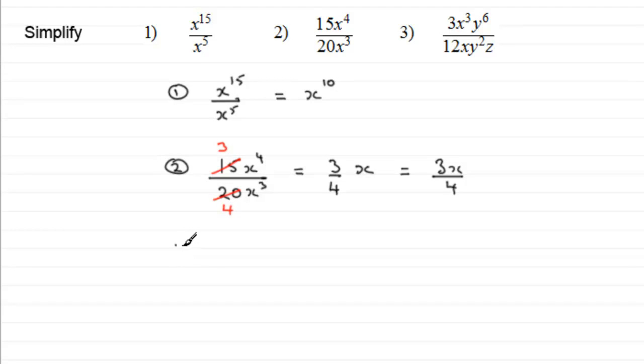Now with number three, the last example, we've got to simplify 3x cubed y to the power 6 all divided by 12xy squared z. In this example again I noticed that with the numbers, three divides both into the 3 and the 12. So we can do 3 into 3 goes once and 3 into 12 goes four times.